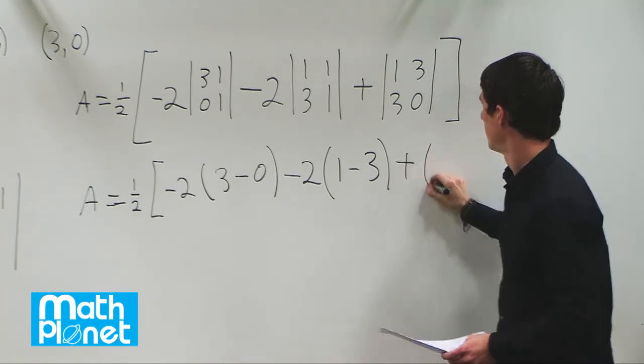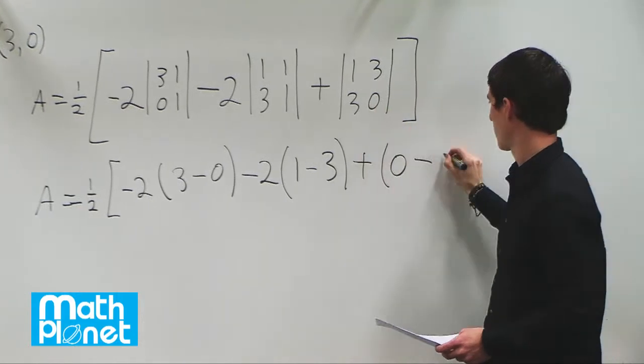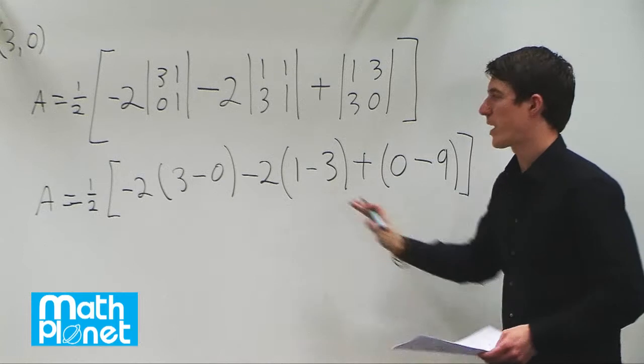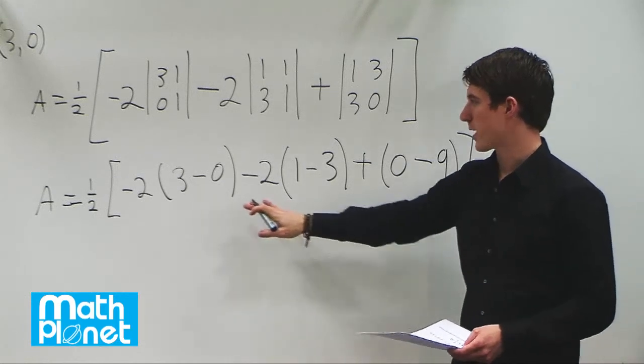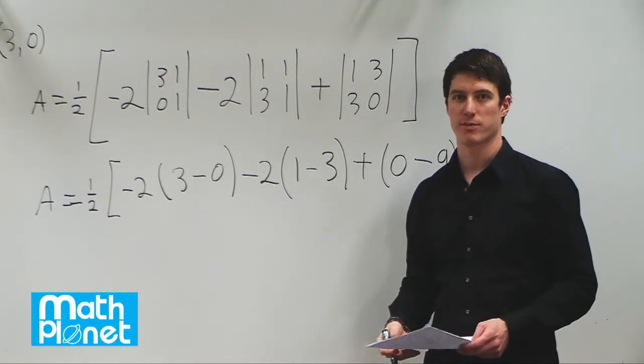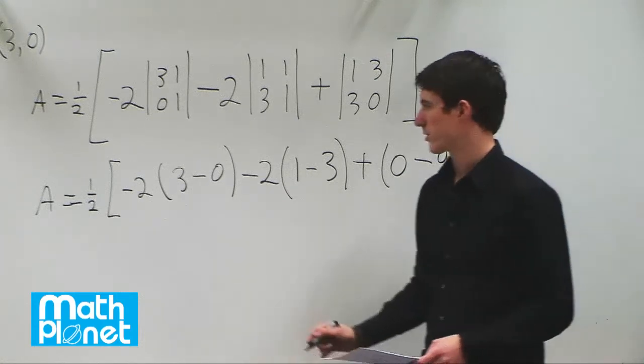Finally, 1 times 0, which is 0, minus 3 times 3, which is 9. So we finally got this down into a normal arithmetic sum that we need to expand a little bit and solve for. But that will give us the area of this triangle. Let's simplify this a little bit, and then we'll finally get our answer.